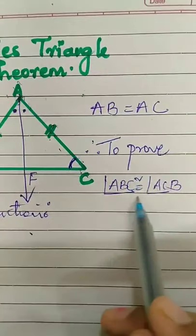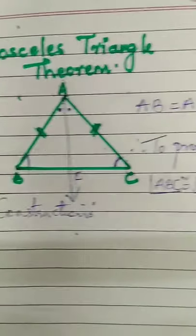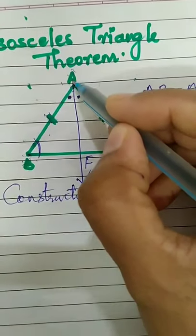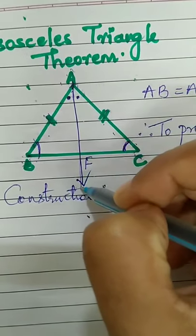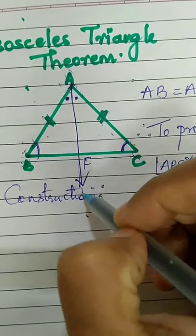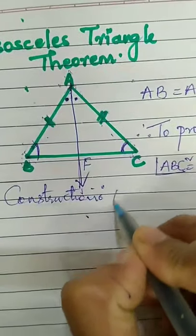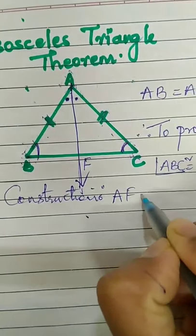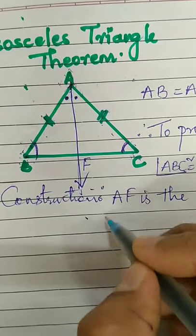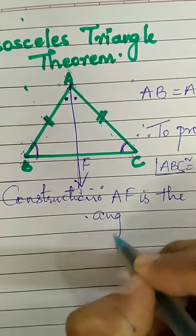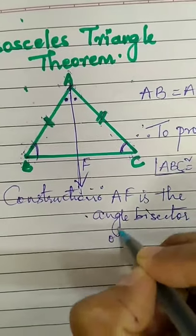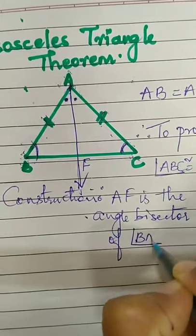To prove angle ABC congruent to angle ACB, we will do a construction. We will draw an angle bisector for the third angle, that is for angle BAC. Let AF be the angle bisector, so ray AF or segment AF is the angle bisector of angle BAC.